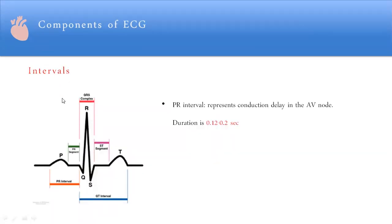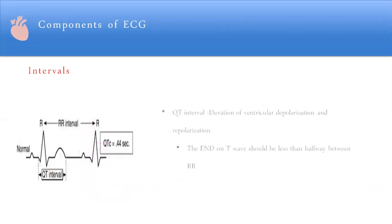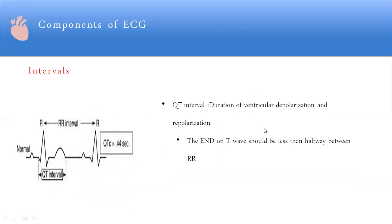The intervals on the ECG include the PR interval, the QT interval, and the RR interval. The PR interval and PR segment reflect AV conduction, with a normal duration of 0.12 to 0.20 seconds. The QT interval spans ventricular depolarization and repolarization, and normally should be less than 50% of the RR interval.